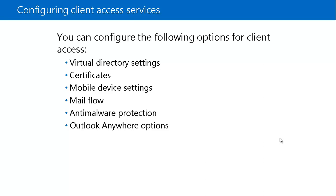You can configure the Client Access options from the Exchange Management Shell or by using the Exchange Admin Center. In the Exchange Admin Center, you can configure the following options: Virtual Directory Settings, Certificates, Mobile Device Settings, Mail Flow, Anti-Malware Protection, and Outlook Anywhere.